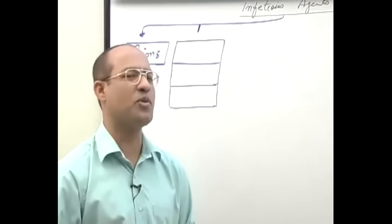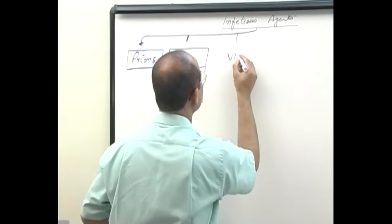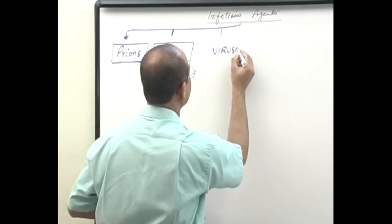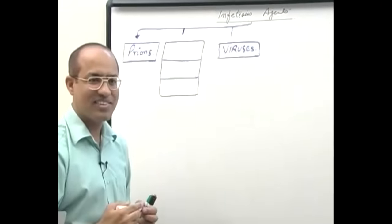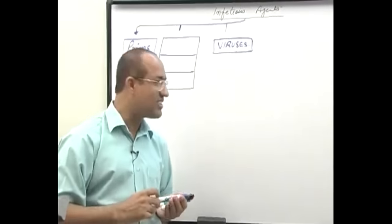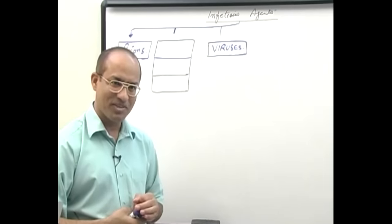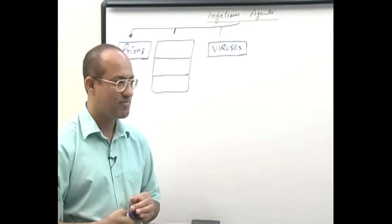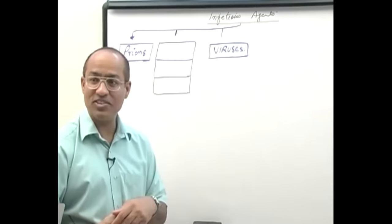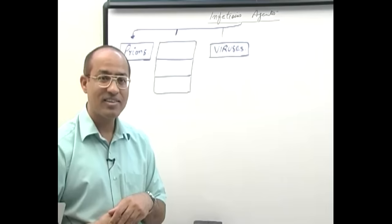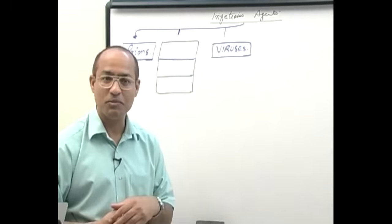The next group includes viruses, and something even smaller than a virus can produce disease indirectly. We are talking about infectious diseases — there are other things besides viruses and bacteria that produce infections.